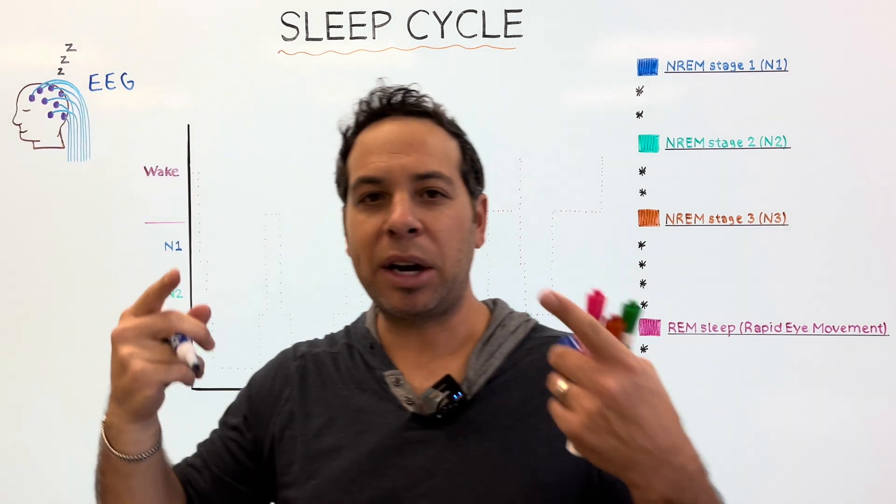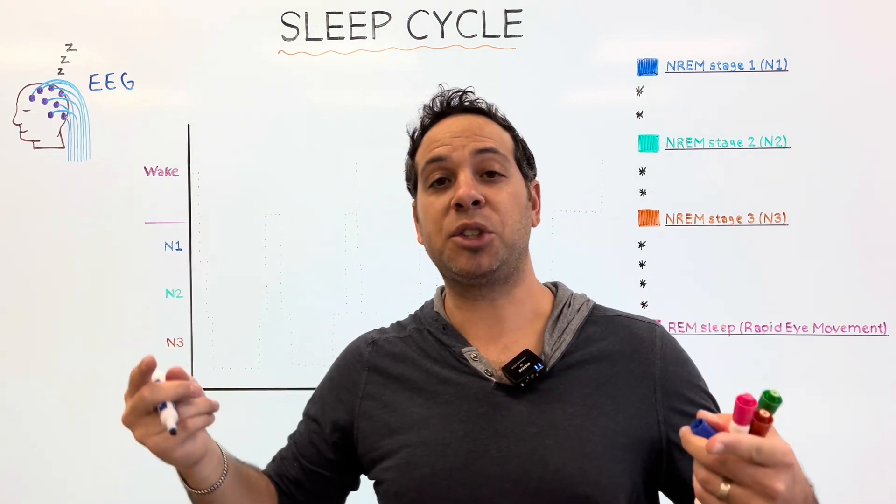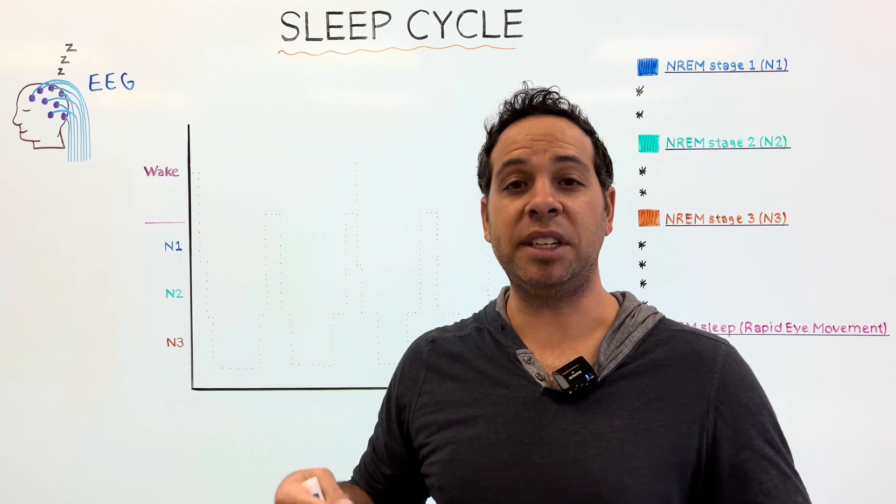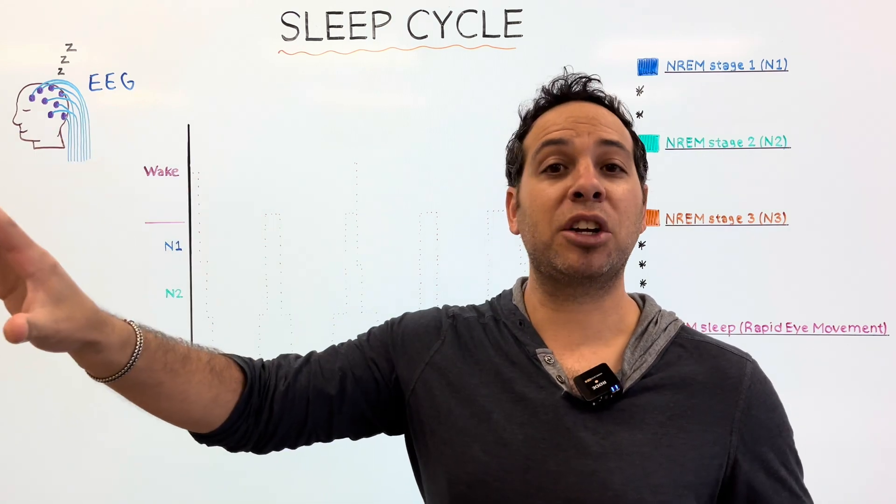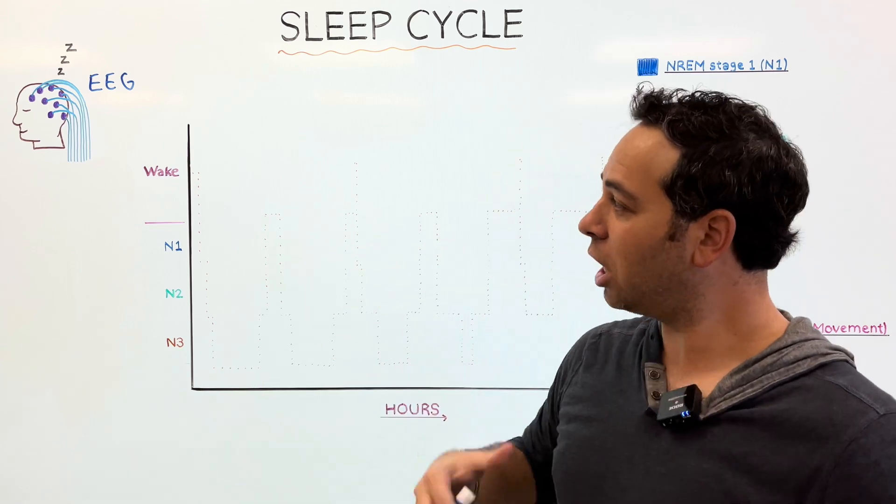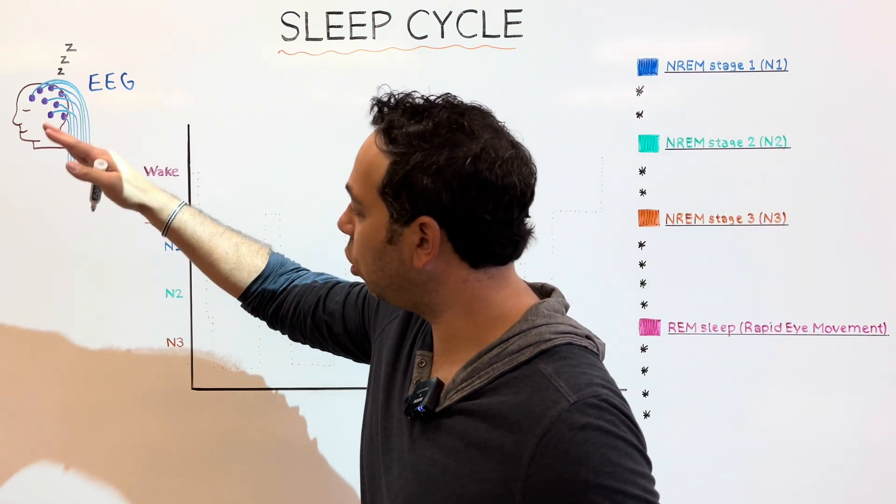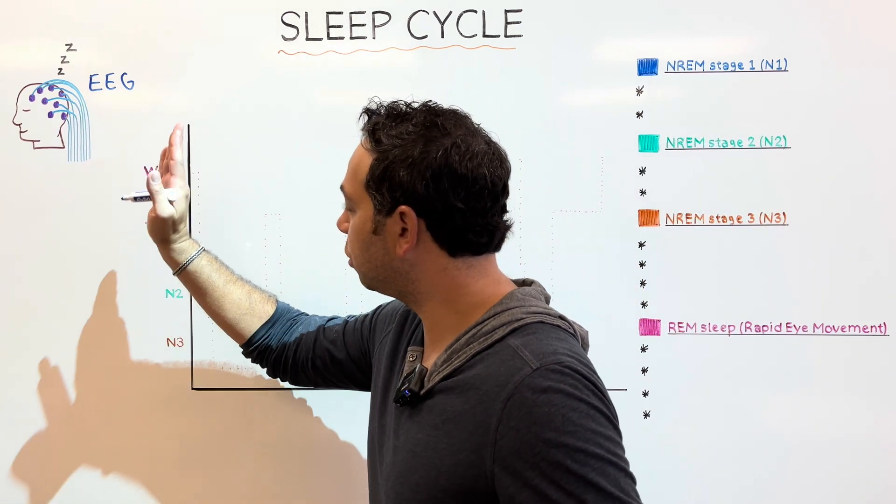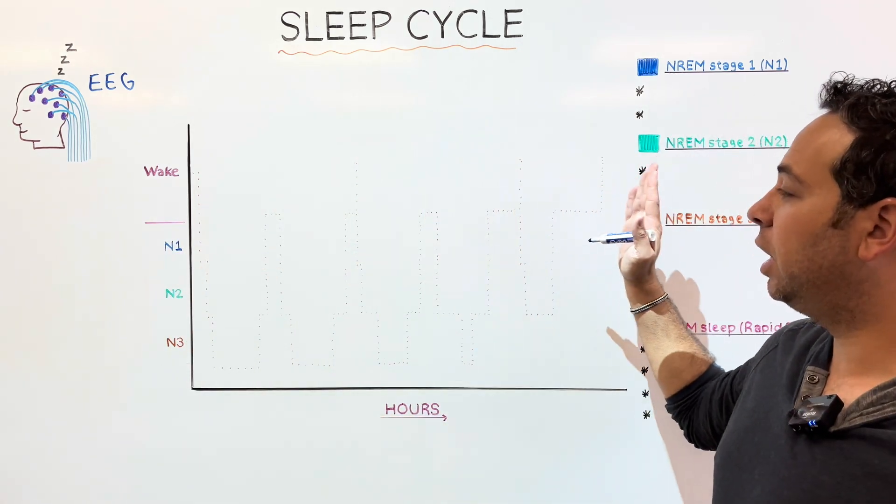For an EEG, you're going to have metal discs placed on your scalp or electrodes that record the electrical activity in your brain, and it's going to put them on a computer screen in the form of a brainwave. So as we talk about each stage, we're going to think about all the waves that occur.